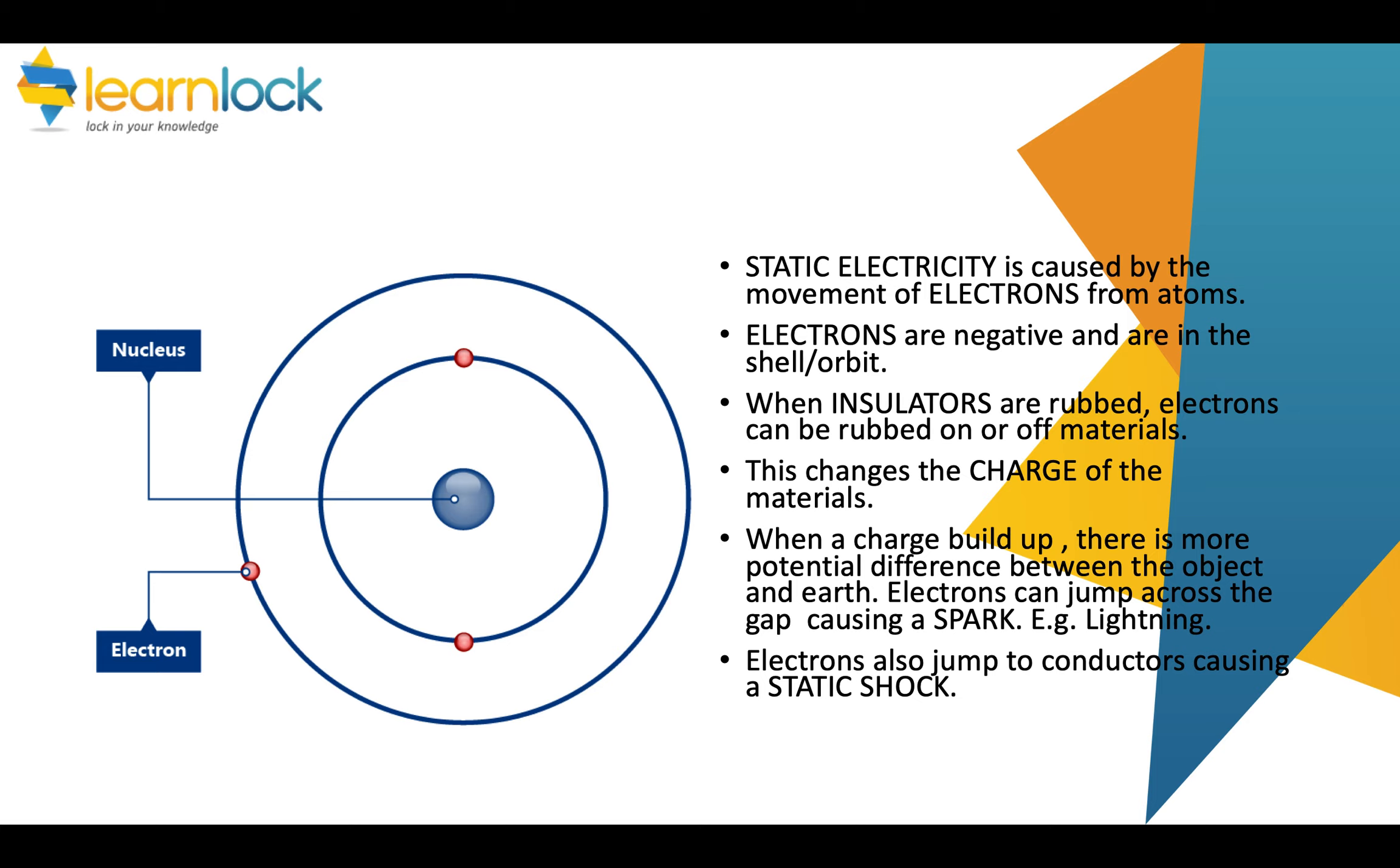When insulators are rubbed, electrons can either be rubbed onto a material or off it, and this changes the charge of the material. When a charge builds up, there's more potential difference between the object and the earth, and this can cause the electrons to jump across this gap, causing a spark, for example, lightning. Electrons can also jump to conductors that are earthed, causing a static shock.